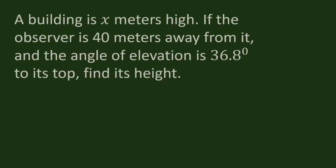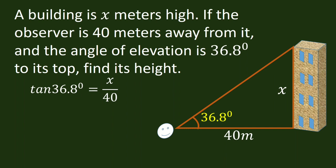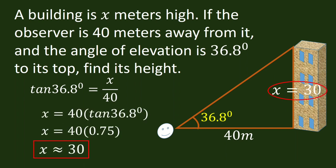Suppose the height of the building is unknown. If the observer is 40 meters away from it and the angle of elevation is 36.8 degrees to its top, find its height. In this case, we will still apply tangent. Tangent 36.8 degrees is equal to x over 40. Let us solve for x using this formula. x is equal to 30 meters, which is the height of the building.